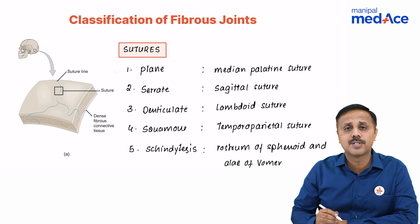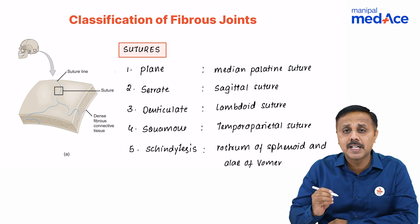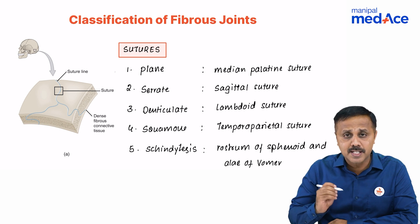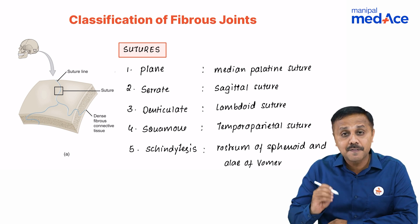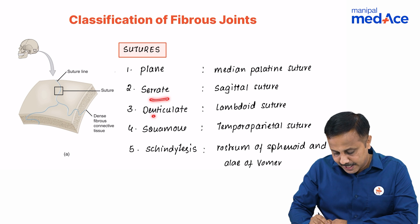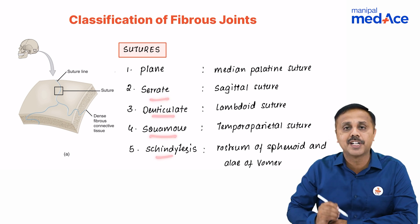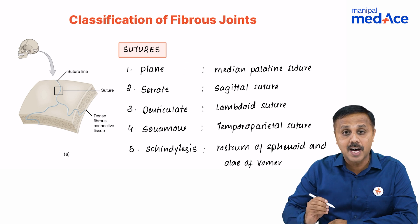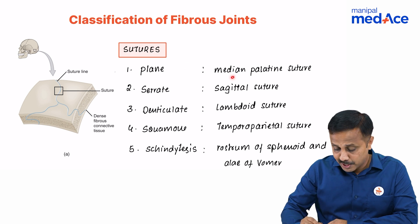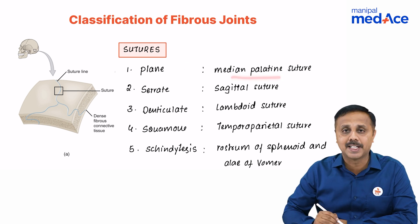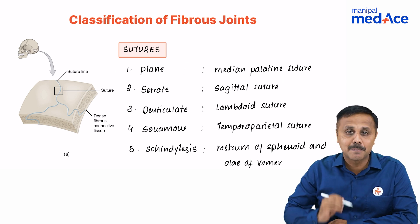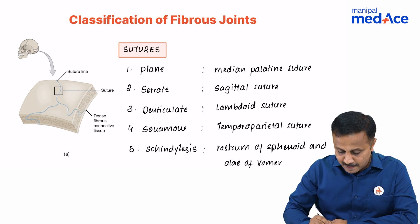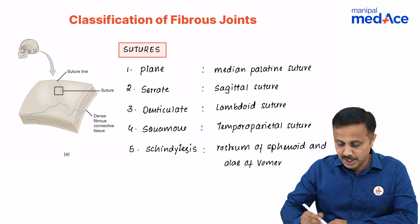Sutural joints are typically found in the skull. These are further subdivided into plane, serrate, denticulate, squamous, and schindylesis. Examples for plane sutures are the suture between the palatine bones — the median palatine suture. The example for serrate suture is the sagittal suture.